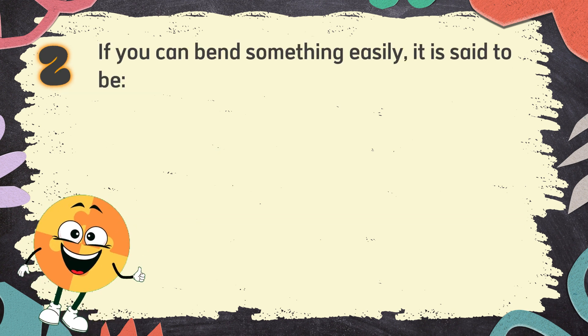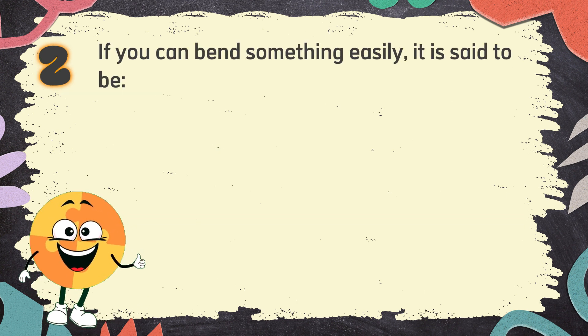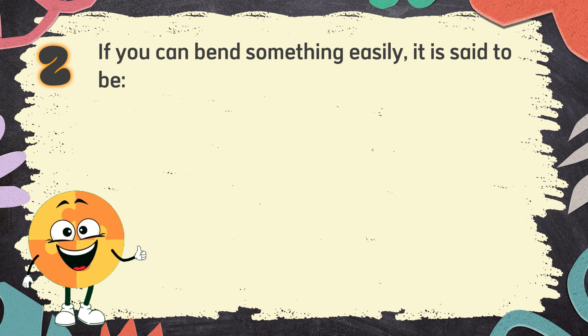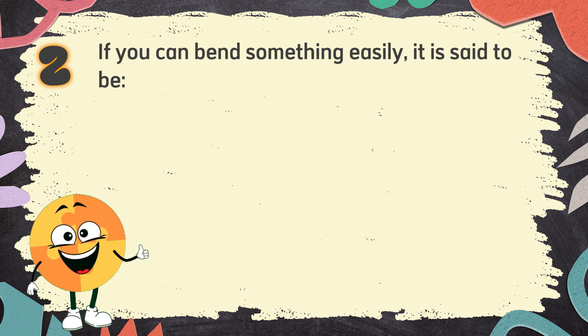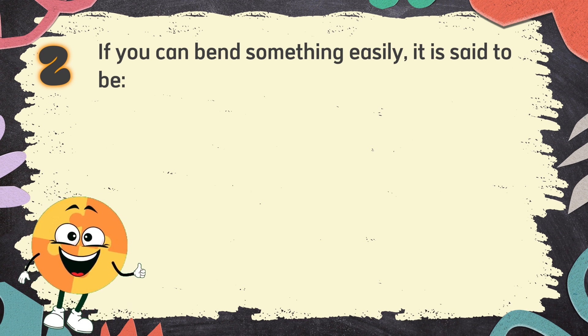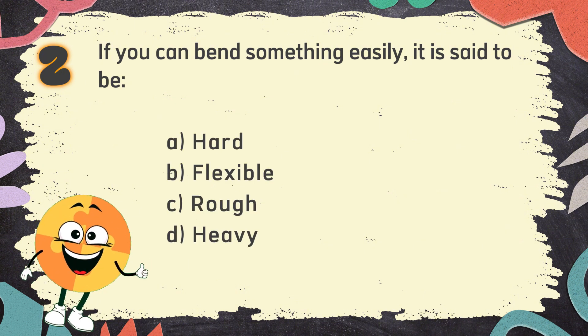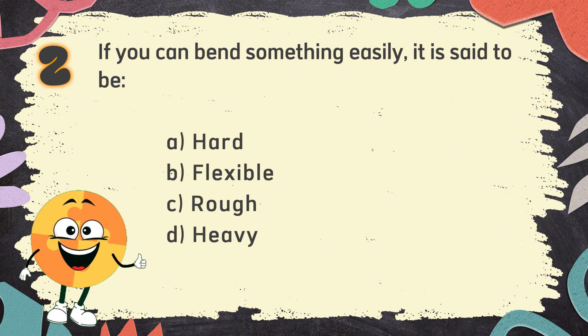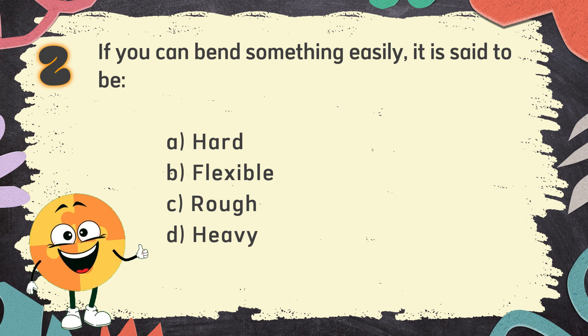Number 2. If you can bend something easily, it is said to be. The choices are: A. Hard, B. Flexible, C. Rough, D. Heavy.